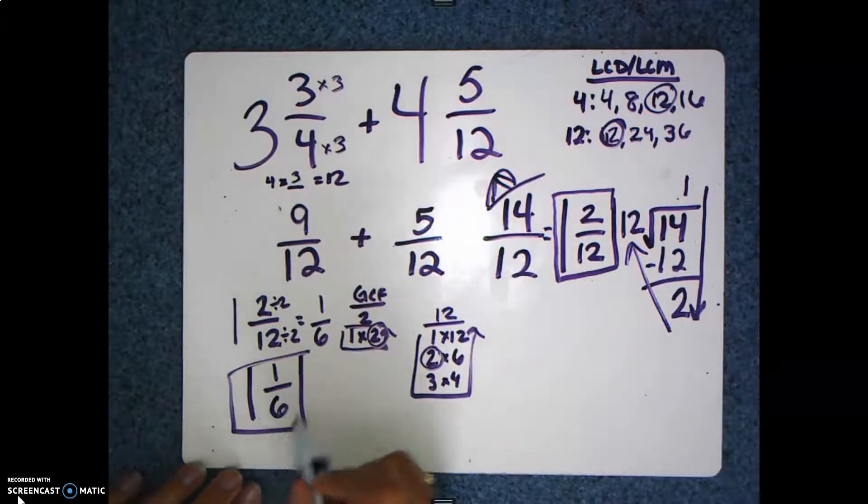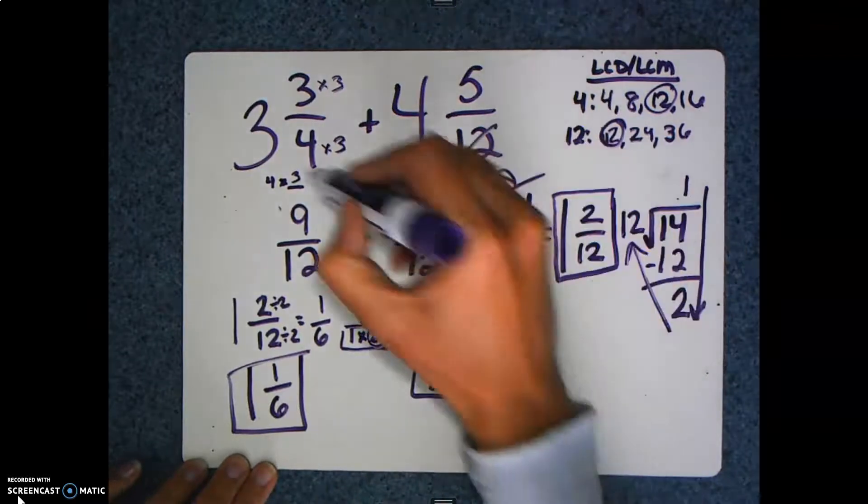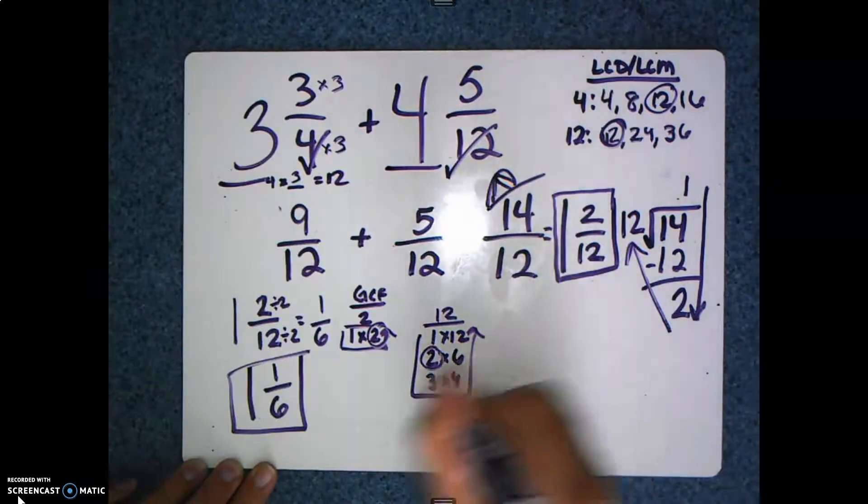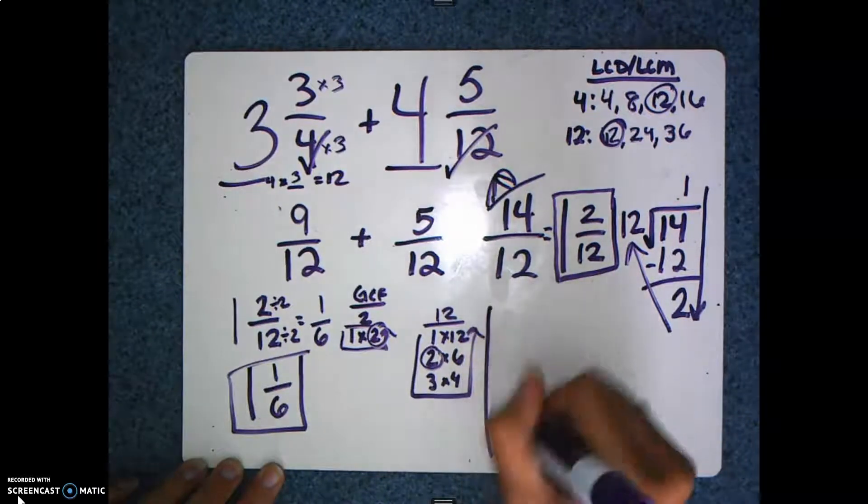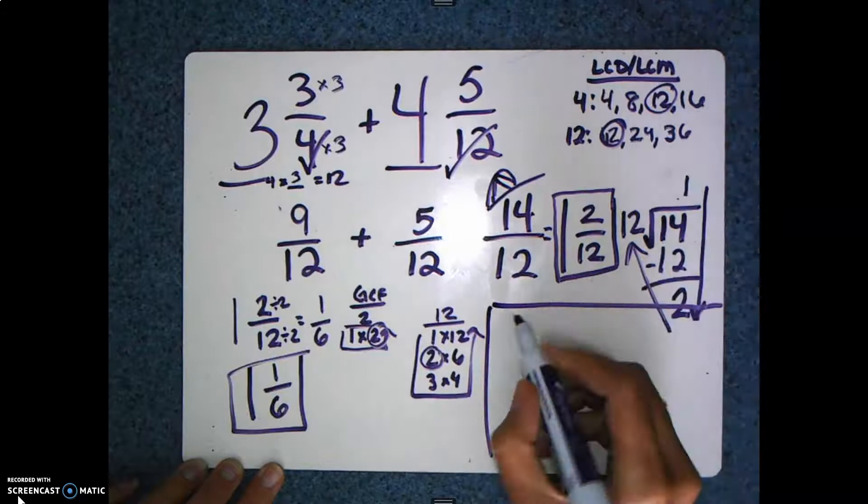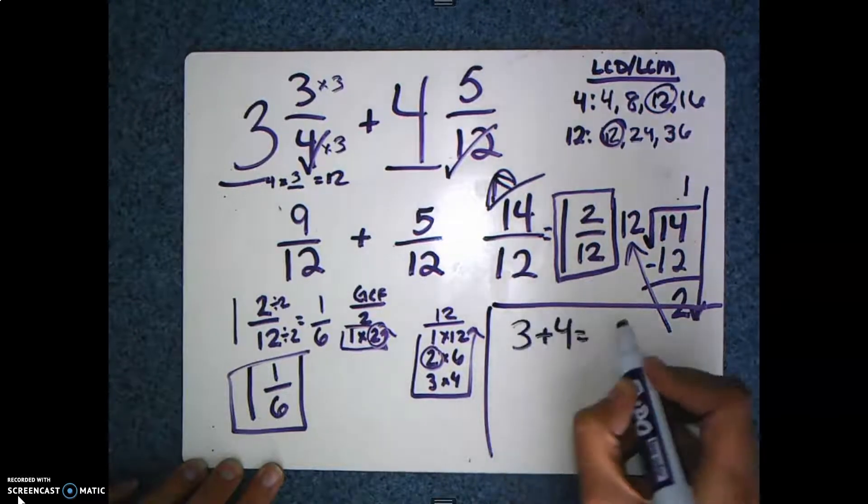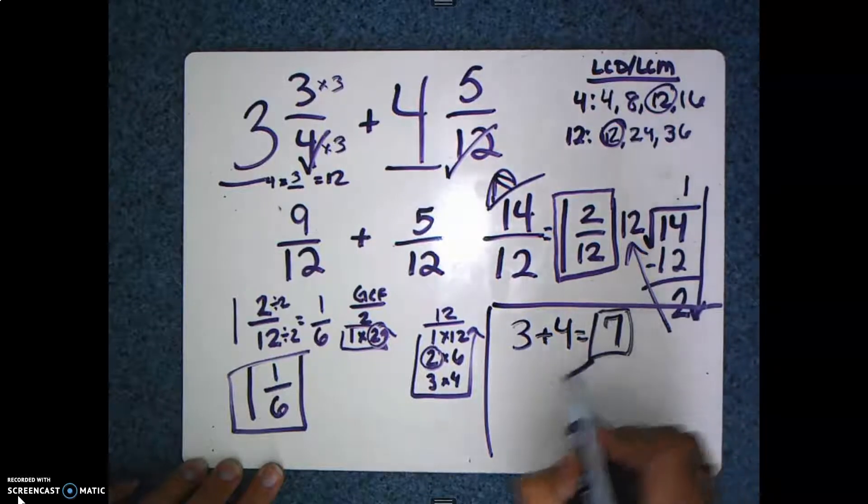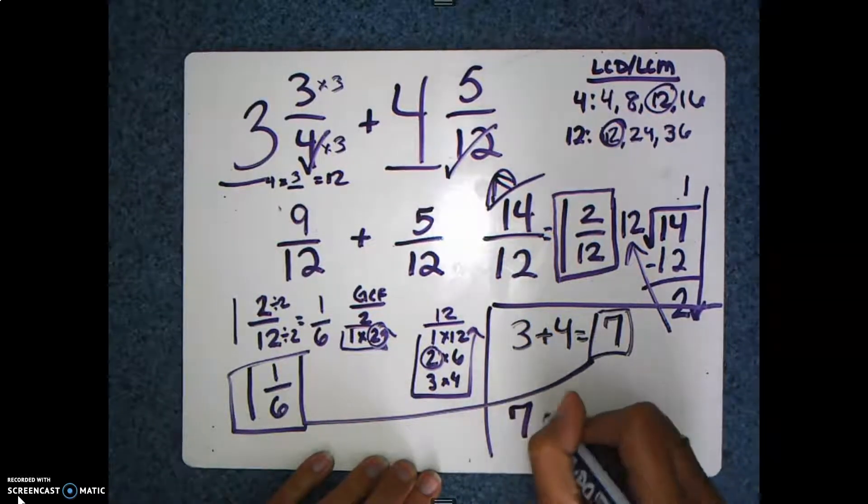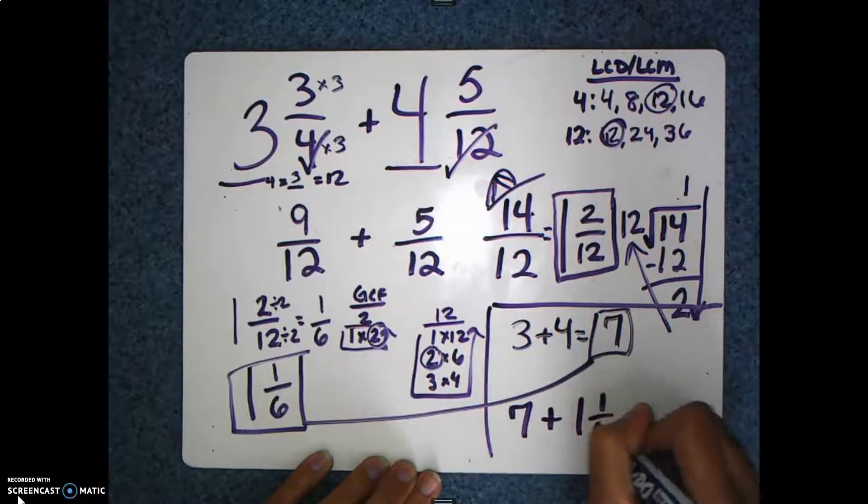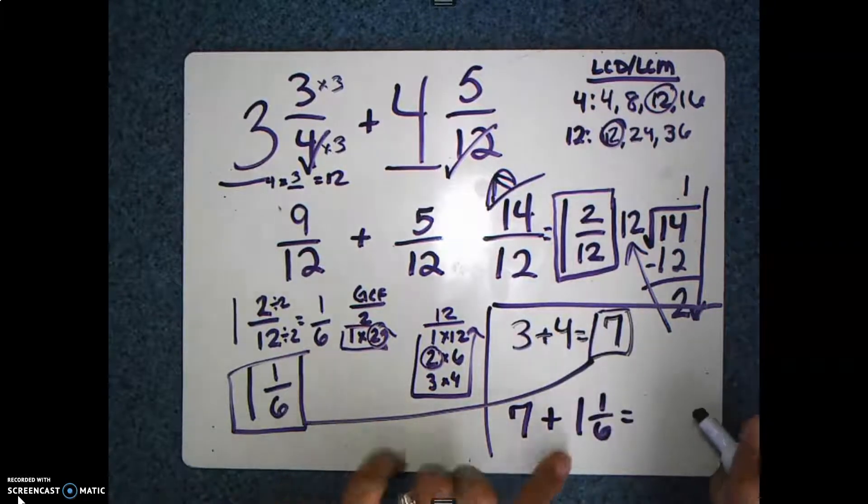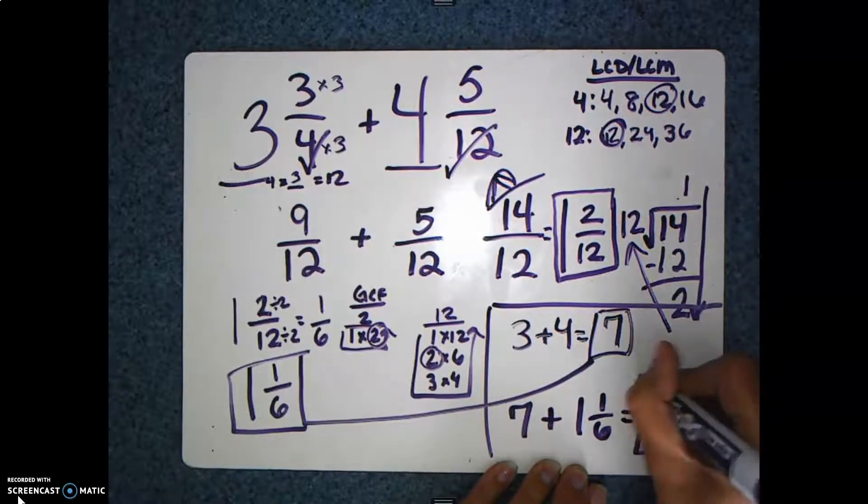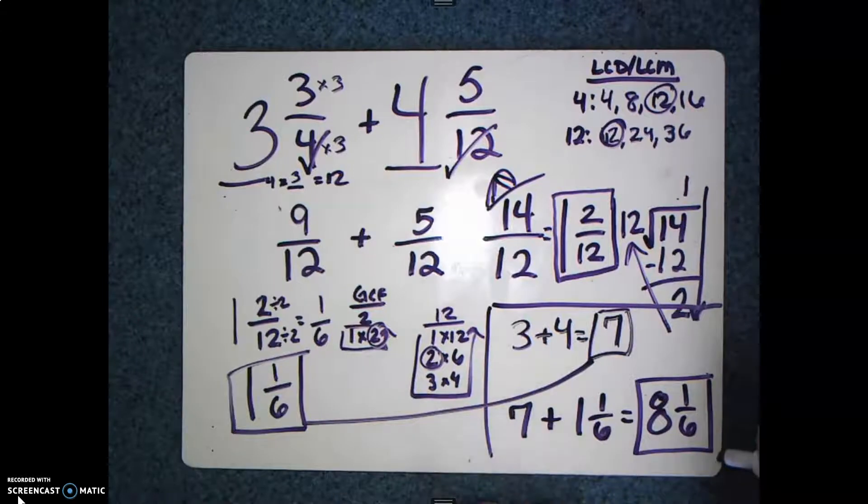Okay, since I have added my fractions, I'm going to check those off because I've already done those. Now I need to add my whole numbers, so that's a quick and easy step. 3 plus 4 will give me 7. So now I need to take 7 and 1⅙ and add those together. 7 plus 1 gives me 8, and I bring over my ⅙. So my answer to this problem is 8⅙.